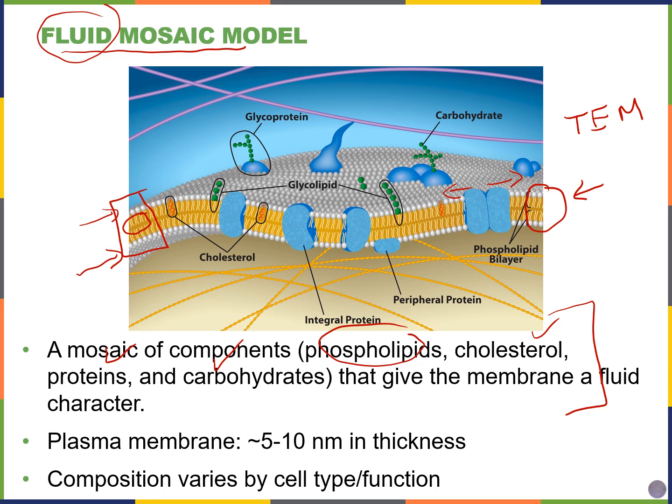For a typical cell, we'll see that the plasma membrane is about 5 to 10 nanometers in thickness when we're looking at that bilayer. About 50% of the membrane will be made of proteins, the lipids will be about 40% of the membrane, and then the carbohydrates will be about 10%. But that's for a general cell — depending on the type of cell, these percentages can vary.